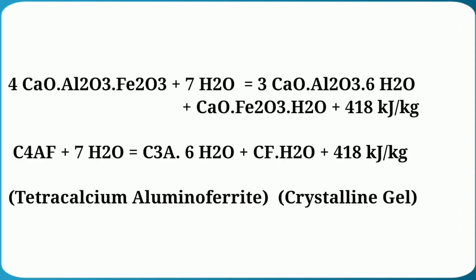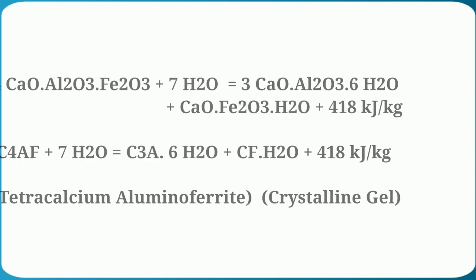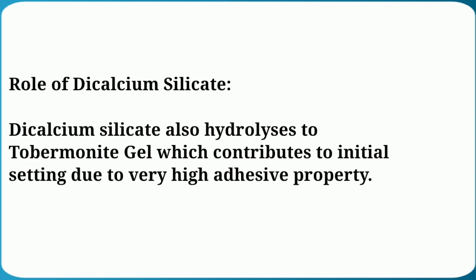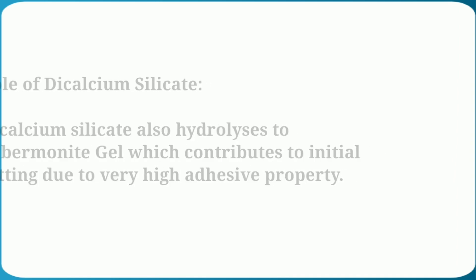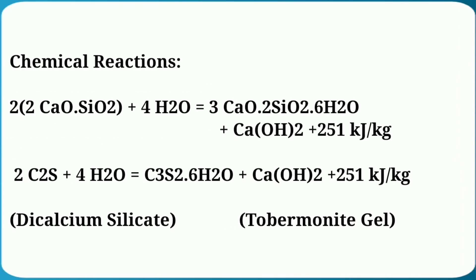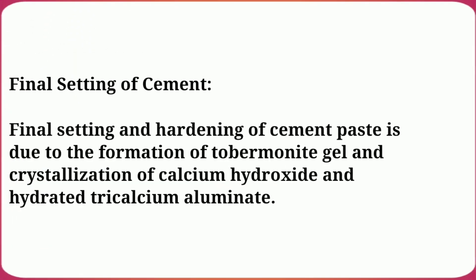This is the formation of crystal gel. In cement's initial setting, dicalcium silicate (C2S) also contributes and forms tobermorite gel on hydrolysis. The chemical reaction: 2CaO·SiO₂ (dicalcium silicate) reacts with 4H₂O to form tobermorite gel (3CaO·2SiO₂·3H₂O) and calcium hydroxide, releasing 251 kJ per kg of energy.